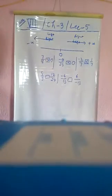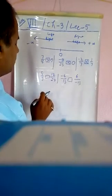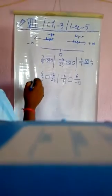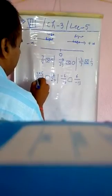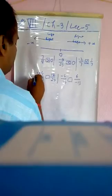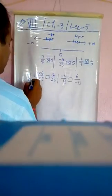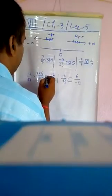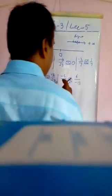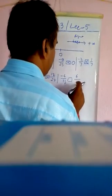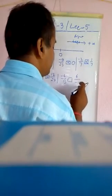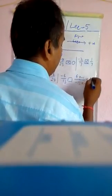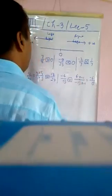For 4/9 and 12/27: we need to make the denominators the same. If you multiply 4/9 by 3/3, it becomes 12/27. Now both have denominator 27 and numerator 12, so they are equal. For -6/13 and 6/(-13): multiply numerator and denominator by -1 to make the denominator positive, giving -6/13. So the two are equal.